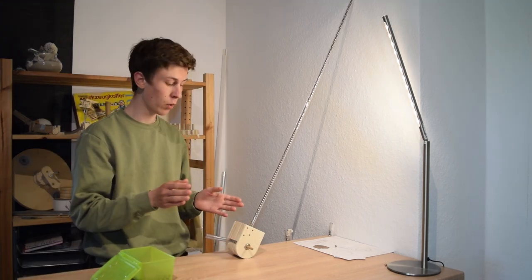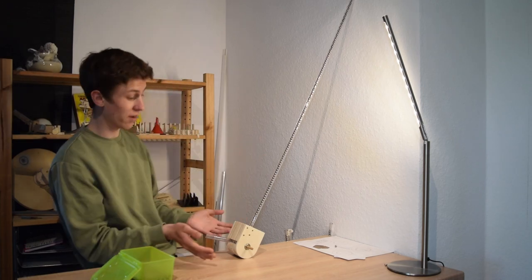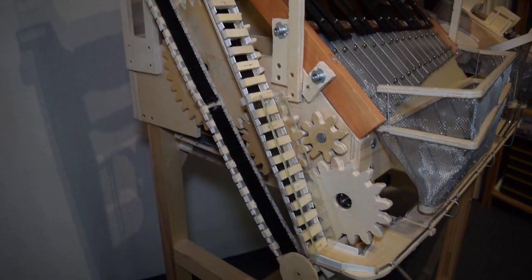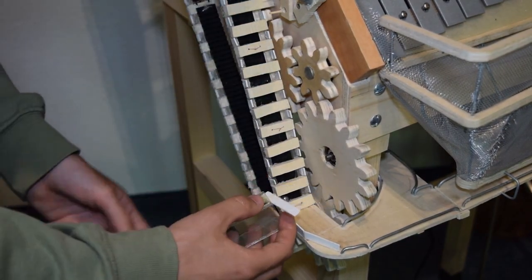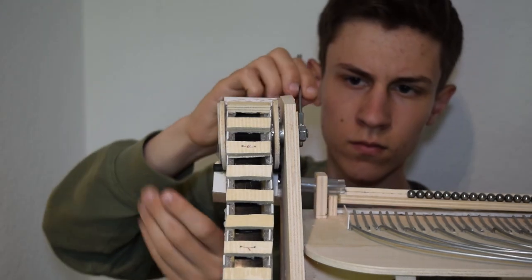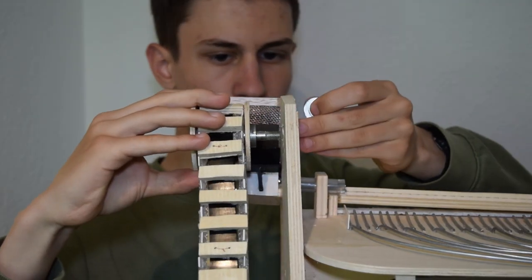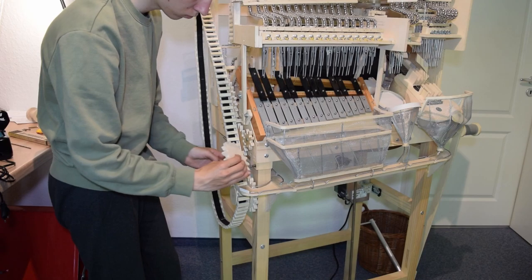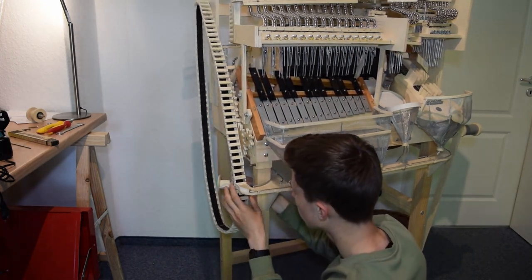So now we can install all the other tubes and install the whole system on the machine. To install the new marble lift I first had to disassemble the old marble lift. So I disassembled the two wheels, one at the top and the other at the bottom. Furthermore I had to disassemble the gears at the bottom so that the new marble lift fits.